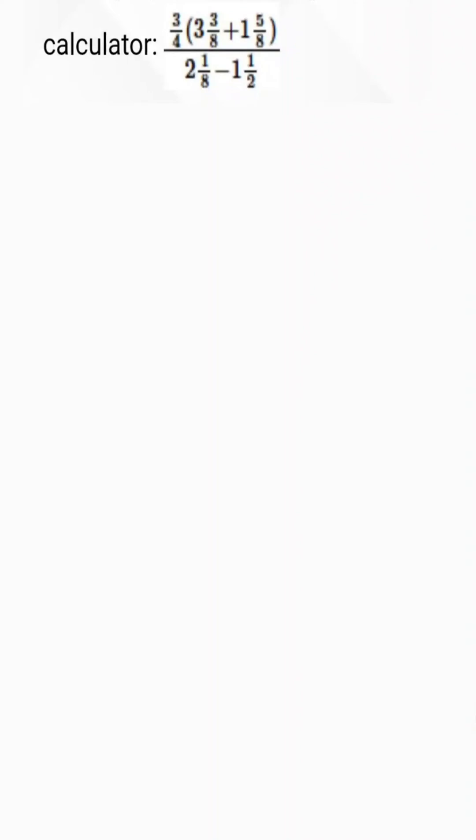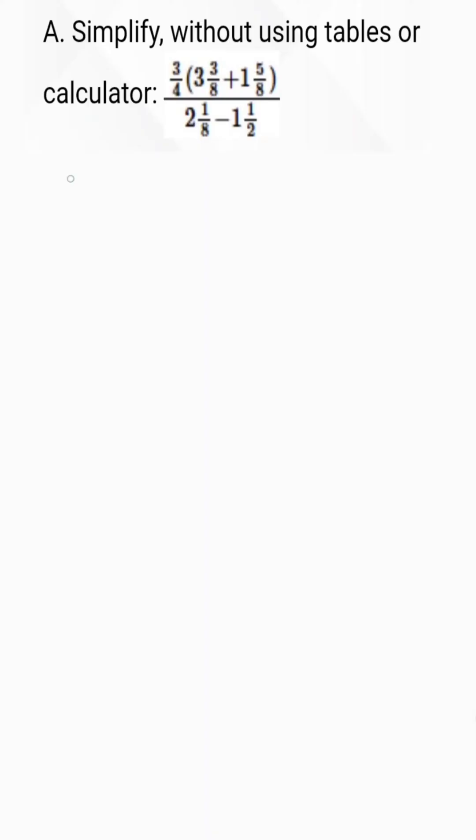Simplify without using tables or calculator. To do this, we have 3 over 4 changing this mixed fraction to improper fraction. We use the rule of fraction that says 3 multiply by 8, which is the denominator, plus the numerator, dividing everything by the denominator of 8.